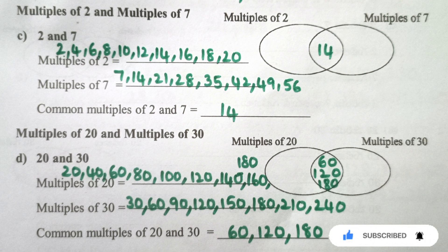Multiples of 7: 7, 14, 21, 28, 35, 42, 49, 56. Common multiples of 2 and 7: 14.